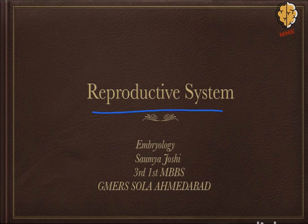We are going to implement an integrated way of teaching the way USMLE Step 1 wants you to know a particular system. First, you will cover the embryology section, then anatomy, then physiology, pathology, and pharmacology of that system. This will be a series of videos and we will start with the embryology lecture.